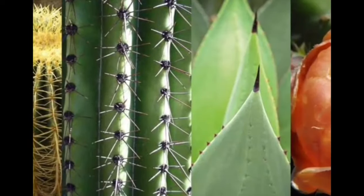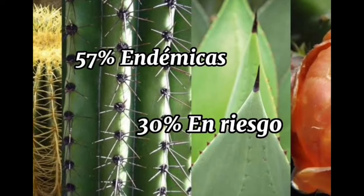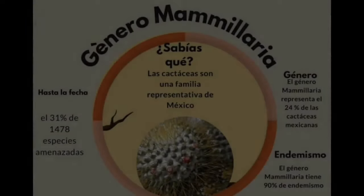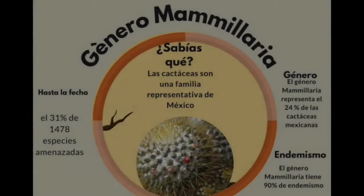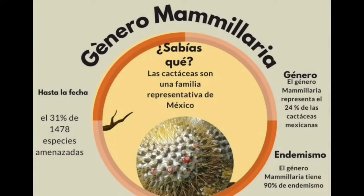Las cactáceas son un grupo representativo de México. El 57% de las especies son endémicas y el 30% se encuentran en riesgo. En la actualidad están entre los grupos taxonómicos más amenazados, evaluando hasta la fecha el 31% de 1,478 especies. El género Mammillaria representa el 24% de las cactáceas mexicanas y más del 50% se encuentran en riesgo.